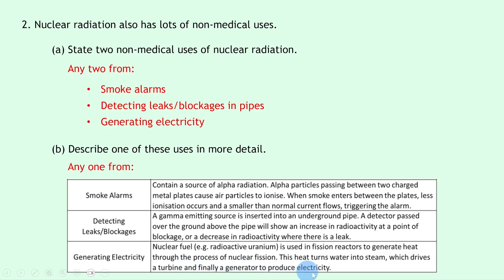For generating electricity, nuclear fuel — for example radioactive uranium — is used in fission reactors to generate heat through the process of nuclear fission. This heat turns water into steam, which drives a turbine and finally a generator to produce electricity. That's all for this video folks, thanks for watching — make sure to give the video a like, subscribe to the channel, and I'll see you in the next one, take care.